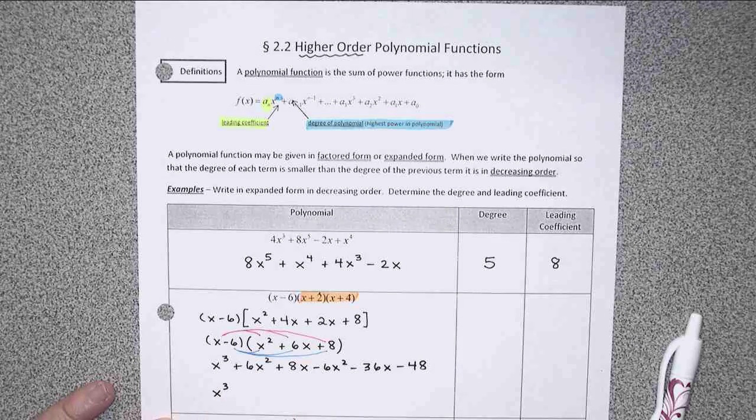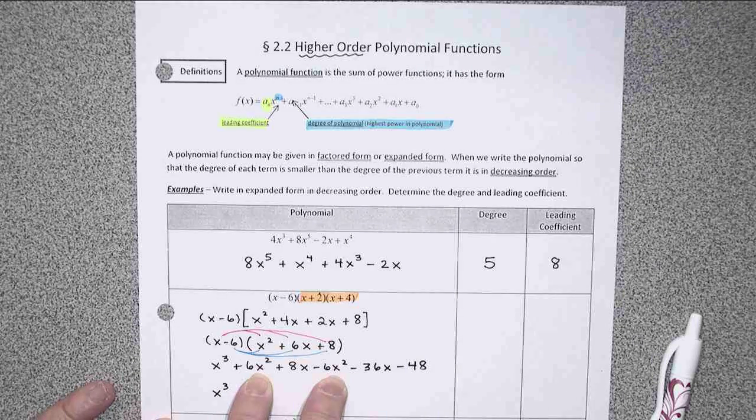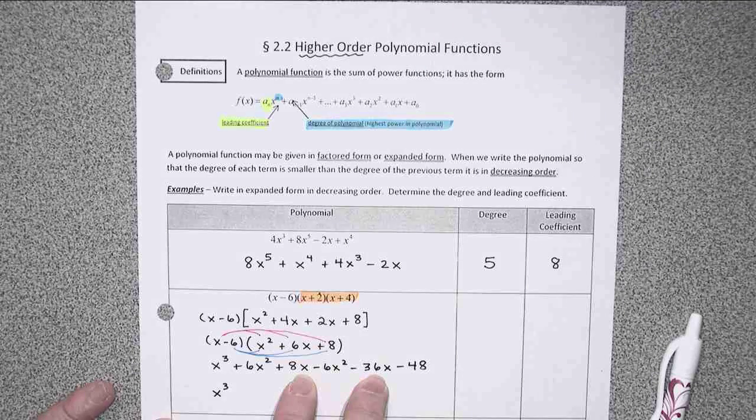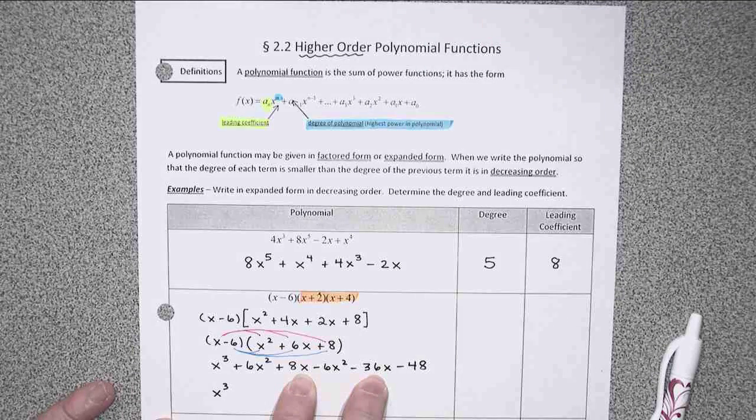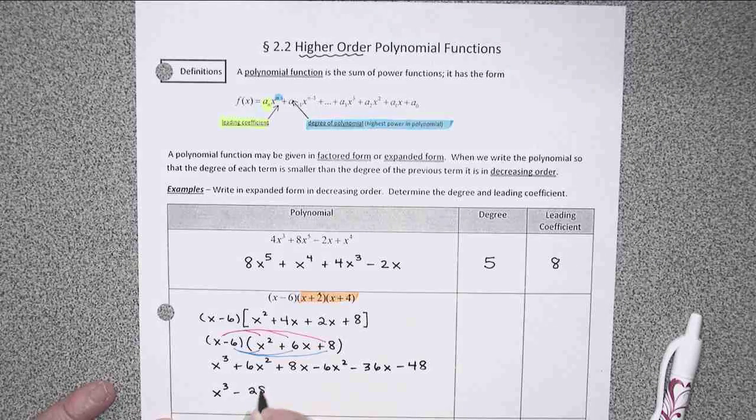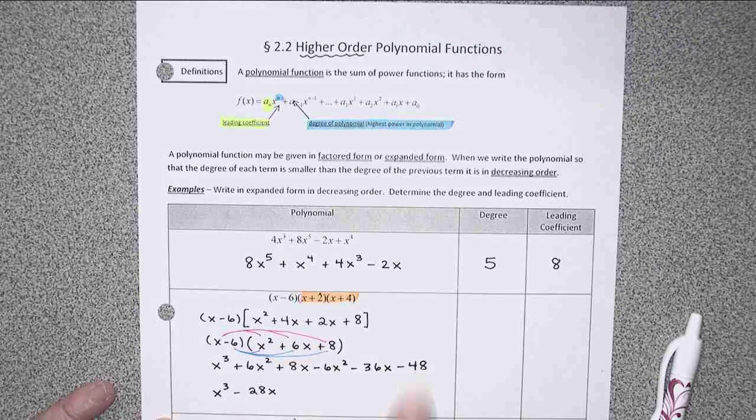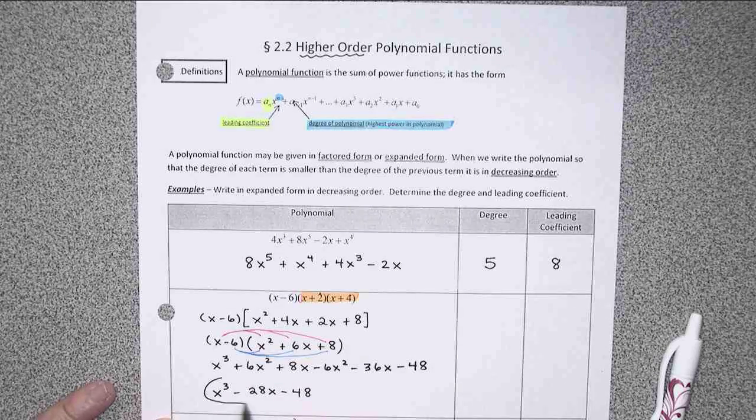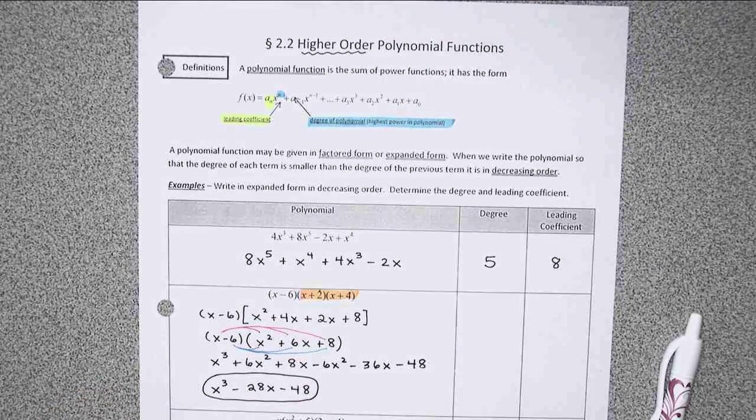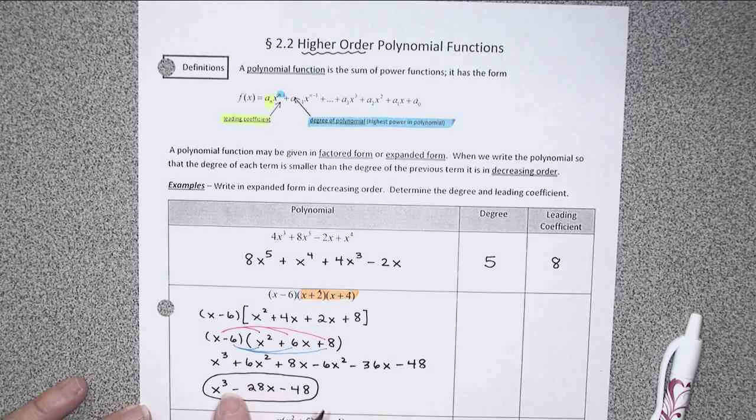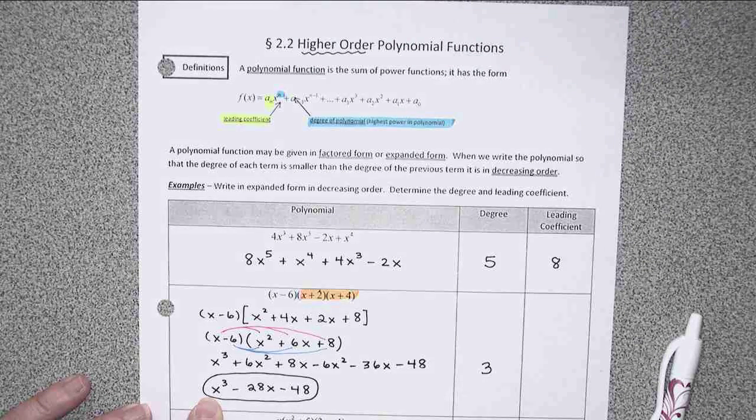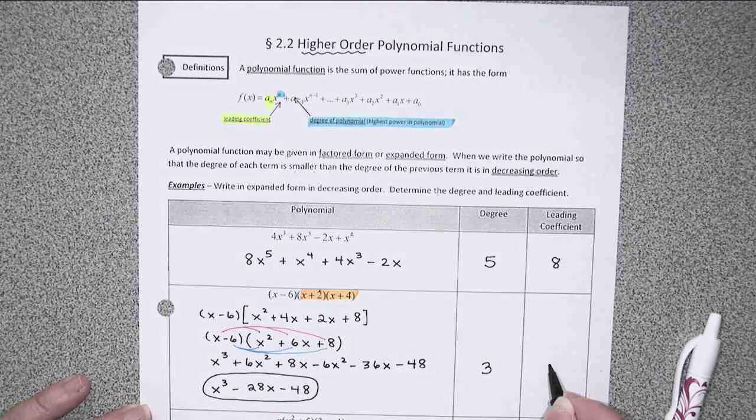I do have some like terms that I can combine. I've got an x cubed. And then I'll notice that as far as x squared is concerned, I have a positive 6x squared and a negative 6x squared, so I'll end up with 0x squared. The x's, 8 minus 36, so negative 28x. And then the constant term, minus 48. And that would be my expanded form written in decreasing order. The degree or highest power is 3, and the leading coefficient is going to be 1.